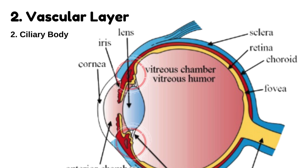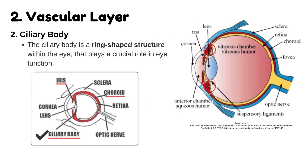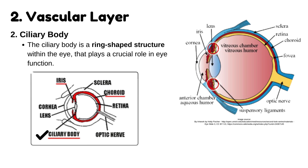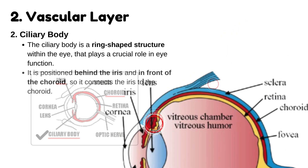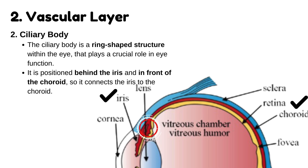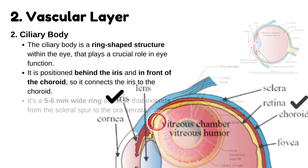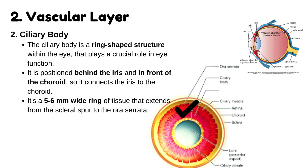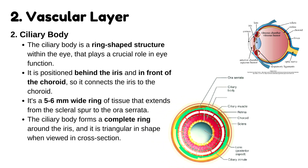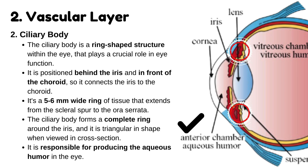The ciliary body is a ring-shaped structure within the eye that plays a crucial role in eye function. It is positioned behind the iris and in front of the choroid, connecting the two. It's a 5–6mm wide ring of tissue that extends from the scleral spur to the ora serrata. The ciliary body forms a complete ring around the iris and is triangular in shape when viewed in cross-section. It is responsible for producing the aqueous humor in the eye.